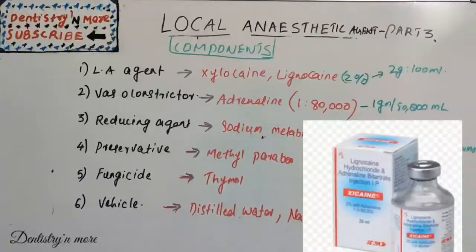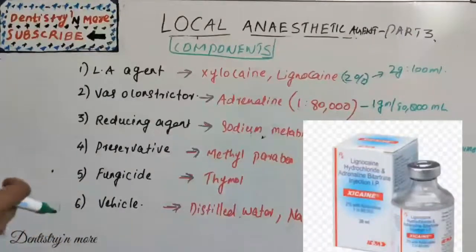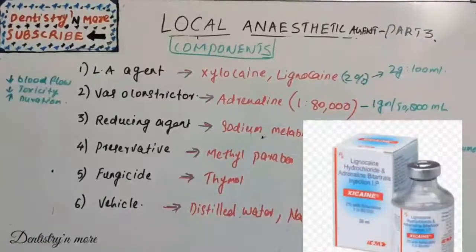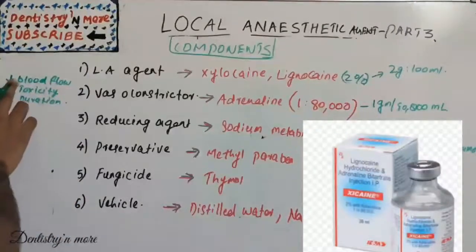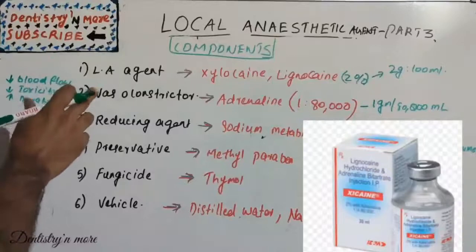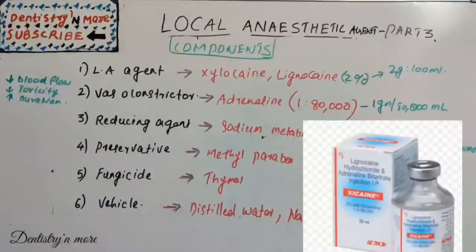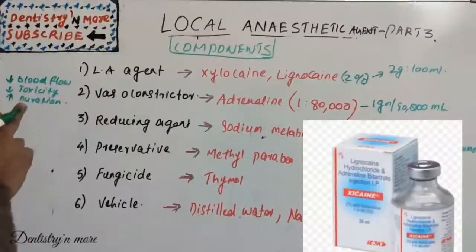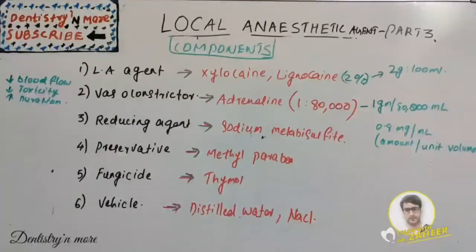Slowing absorption results in lower anesthetic levels in the bloodstream, thereby minimizing the risk of local anesthesia toxicity. It also increases the duration of anesthesia by allowing the local anesthetic to remain around the nerve for a longer period of time. In short, the vasoconstrictor does three jobs: decreases blood flow to the injection area, decreases toxicity by slowing absorption into the cardiovascular system, and increases duration.